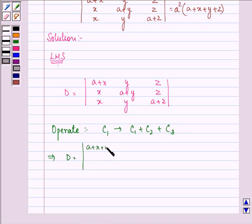a plus x plus y plus z, a plus x plus y plus z, a plus x plus y plus z in the first column and the remaining will be same in the other columns.